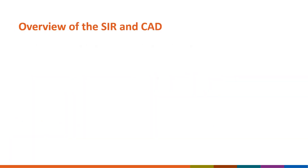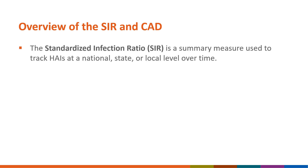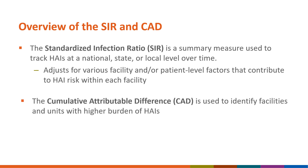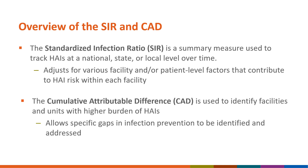Now let's discuss an overview of the SIR and the CAD. The Standardized Infection Ratio, or SIR, is a summary measure used to track HAIs at a national, state, or local level over time. The SIR adjusts for various facility and/or patient-level factors that contribute to HAI risk within each facility. The Cumulative Attributable Difference, or CAD, is used to identify facilities and units with a higher burden of HAIs, and allows specific gaps in infection prevention to be identified and addressed.